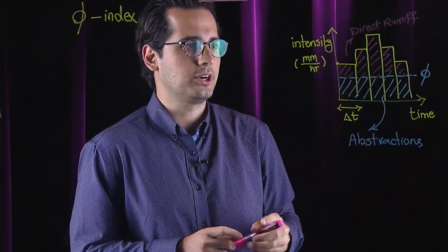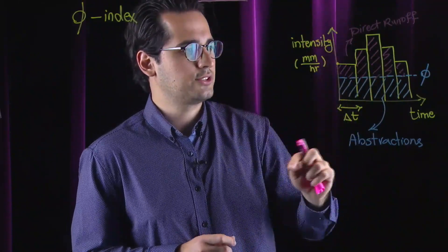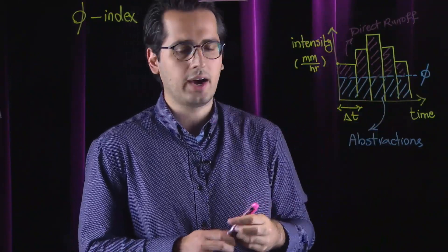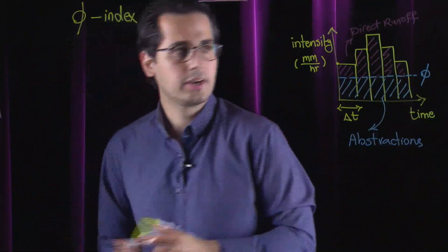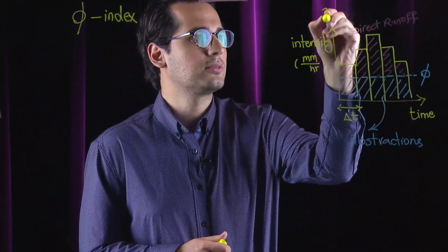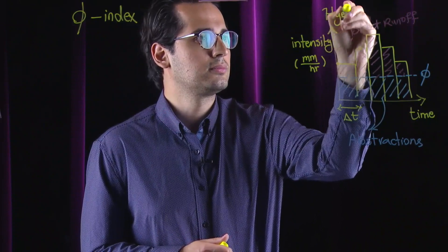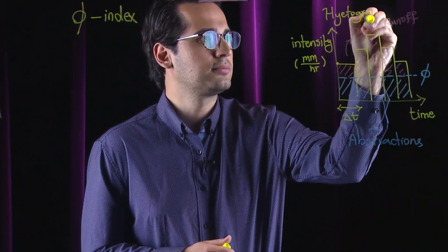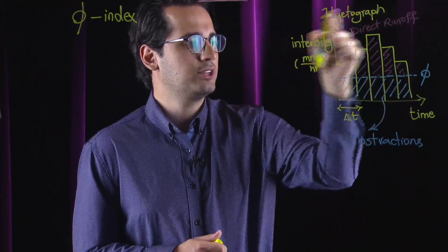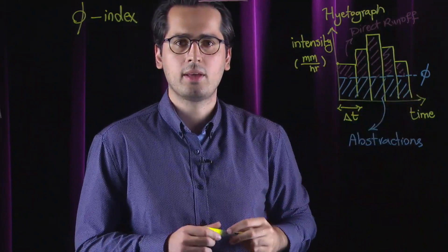So, the area that I have sketched for you over here, whenever you have rainfall intensity over time, that's called a hyetograph. Let me write it down for you over here, it's called a hyetograph. Rainfall intensity over time.